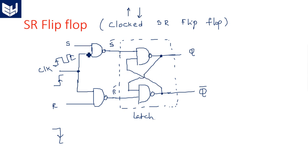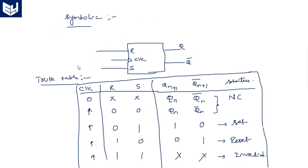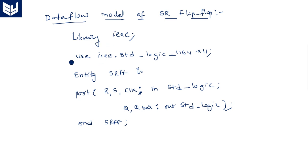The clock is a signal that controls the entire operation of the latch. Whenever a rising edge occurs the inputs will be passed to the latch, and when the falling edge occurs there is no change. The truth table and the corresponding data flow model we have already seen.